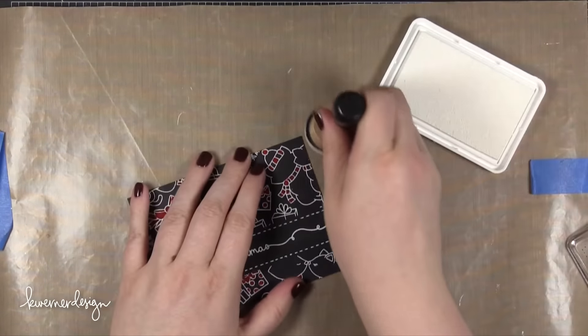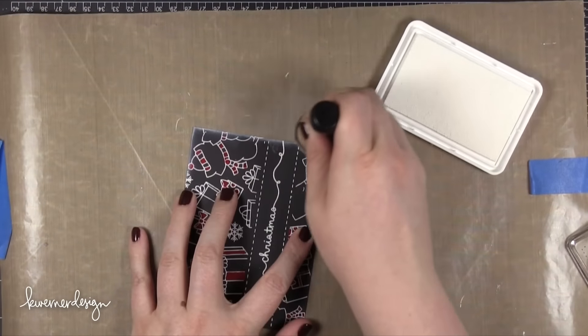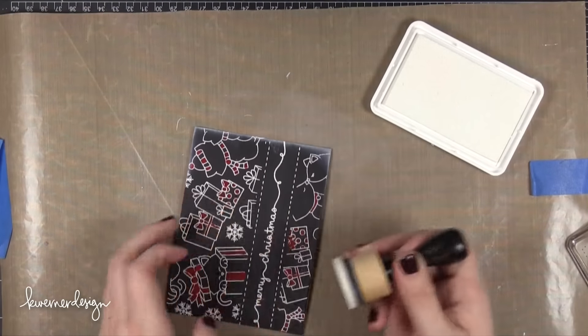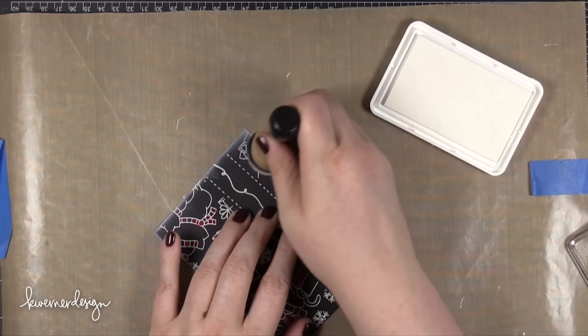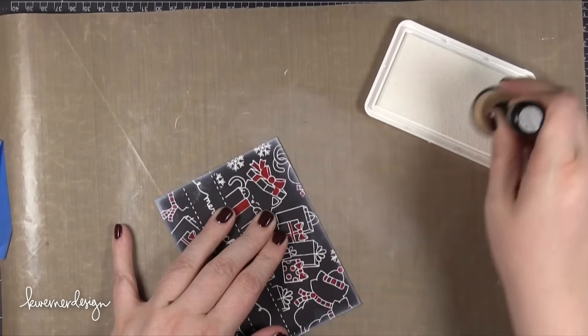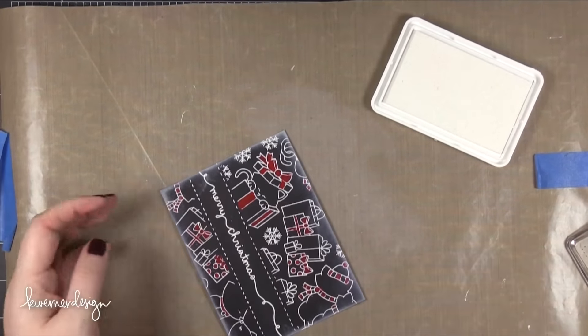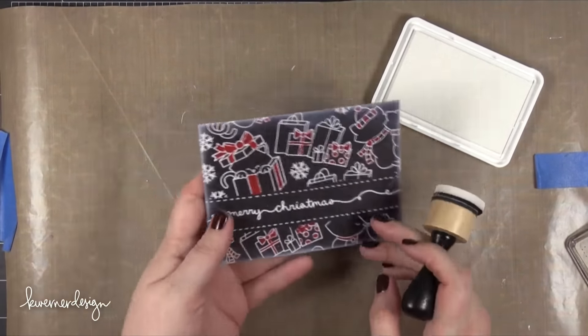Now I'm taking some white pigment ink from Simon Says Stamp and a mini round blending tool and I'm just bringing in a little bit of white pigment ink on the edges of the card stock here. I just thought it sort of looked like a chalk board and I thought I'd go ahead and just create that look even more with a little bit of white ink around the edges.